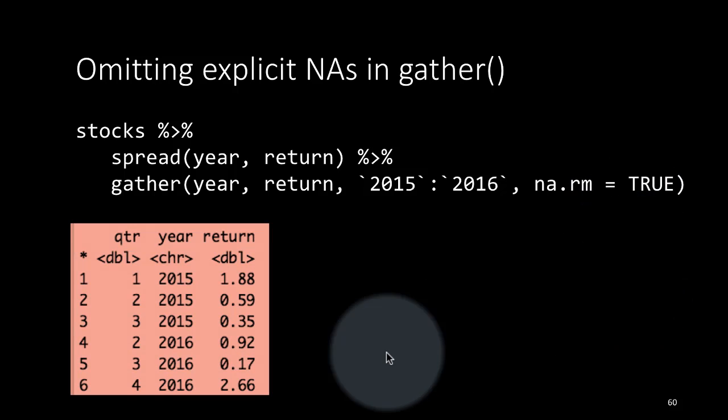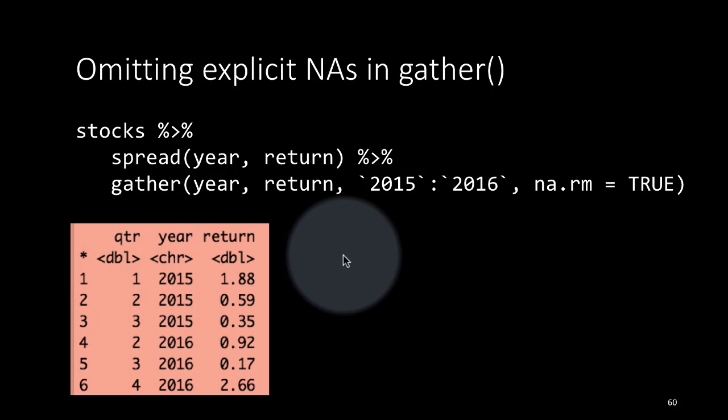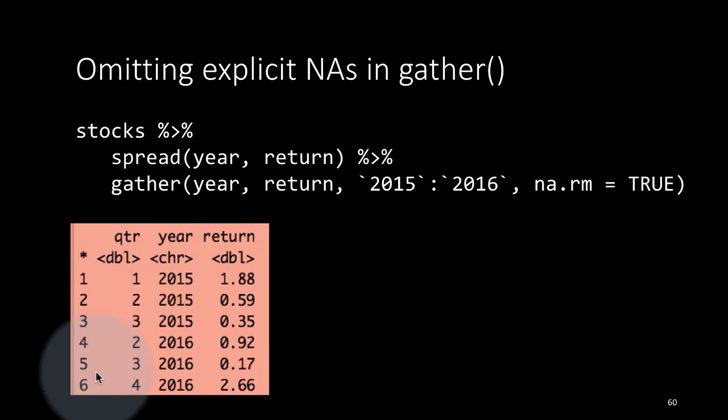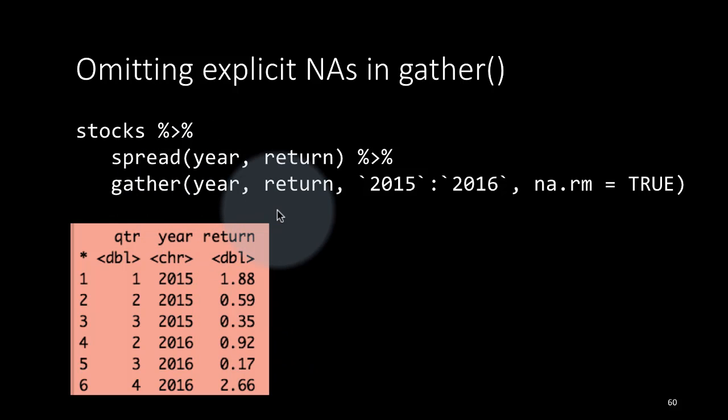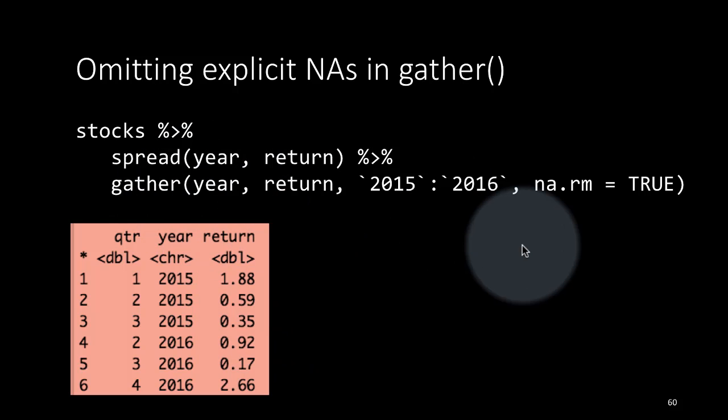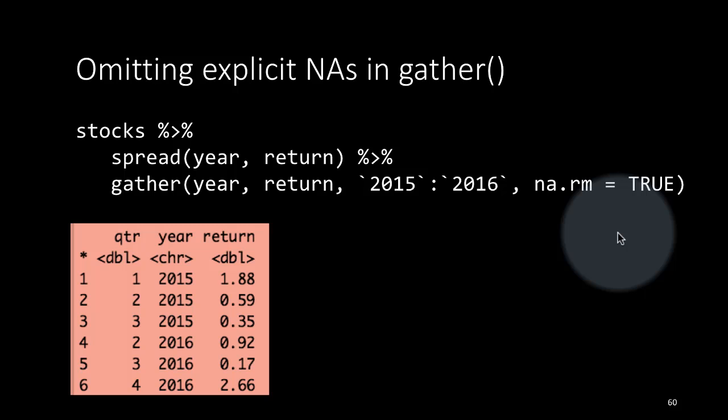When you do that, notice that the two missing values have now gone. There are only six rows. Earlier we had eight rows corresponding to the four quarters of each of the two years, but now we have only six rows because two of the values are missing. While gathering, it is possible to use na.rm equals true and get rid of the missing values.